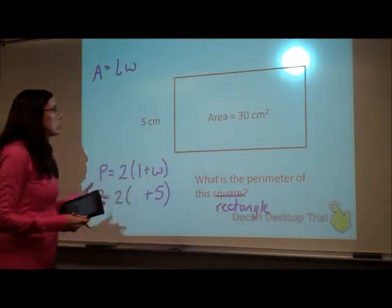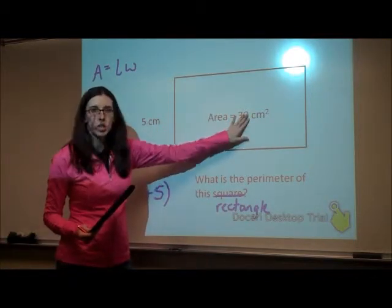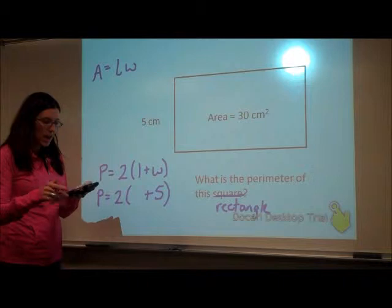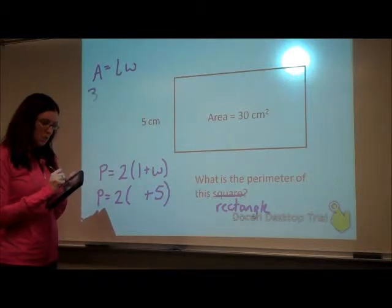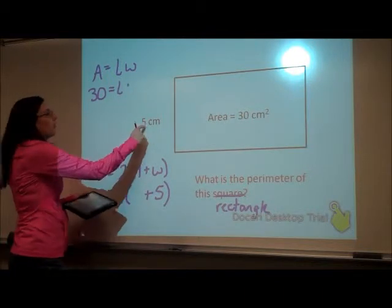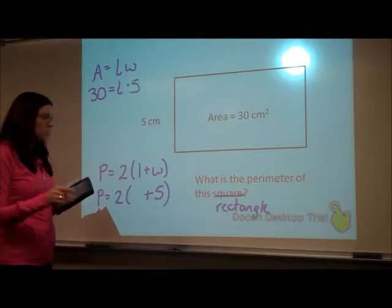So substituting in my numbers, the area is 30. So in place of my A, I'm going to write 30. I still don't know what my length is, but my width is 5.